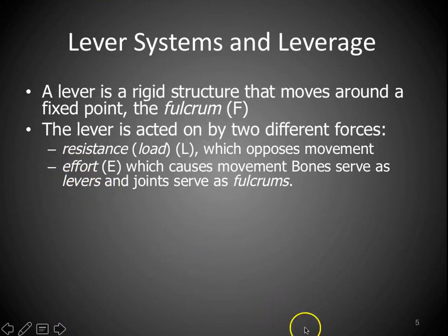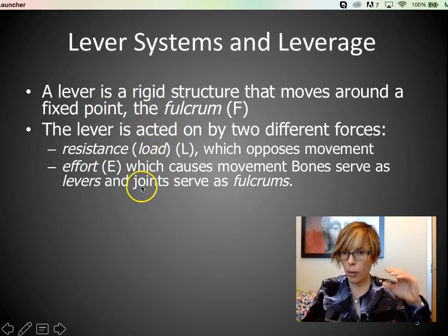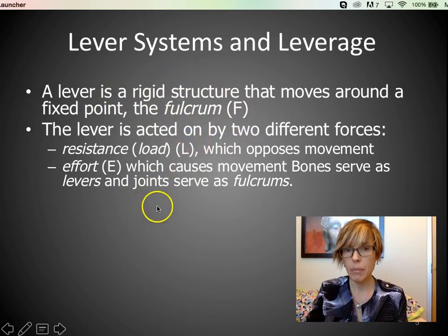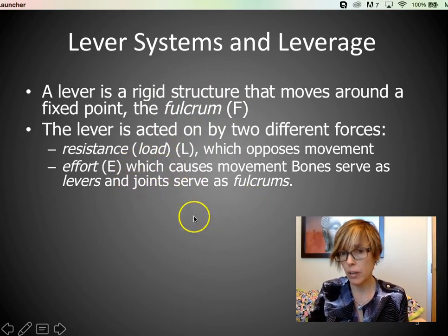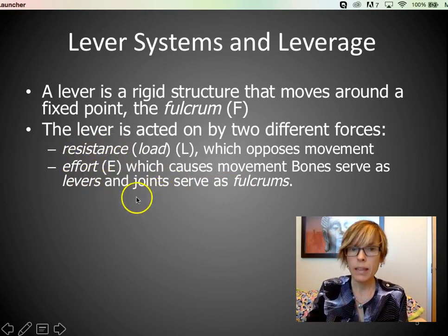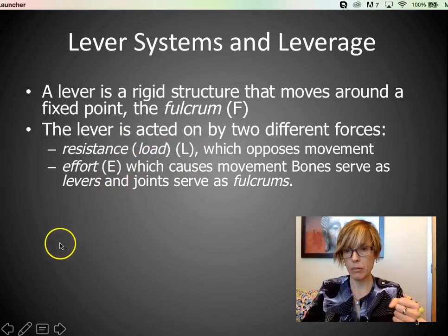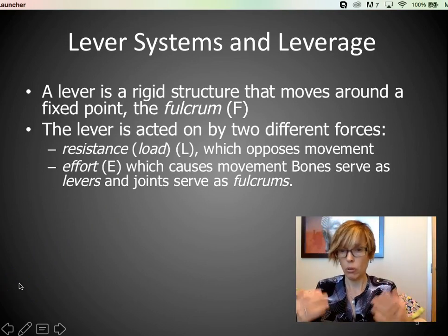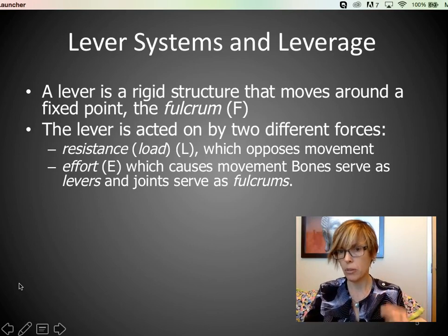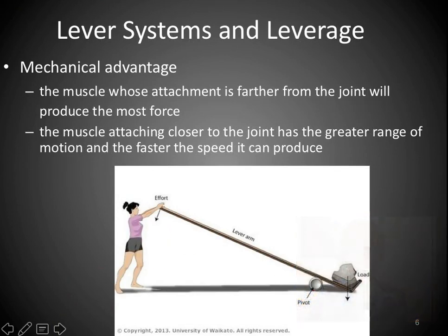Some key definitions: the point around which bones move is called the fulcrum — our joints serve as our fulcrum. The effort is put in by the muscles. The resistance or load is either the weight of the limb, whatever we're holding, or the weight of our body. We'll see some pictures in a couple of slides to make this clearer.